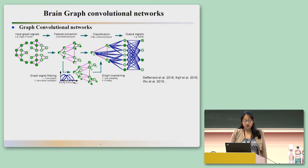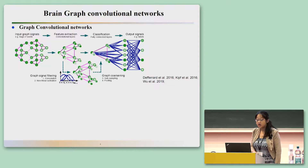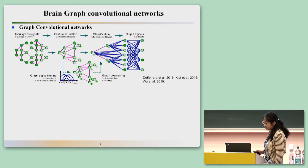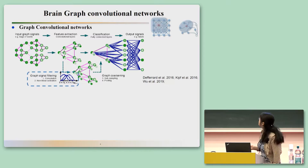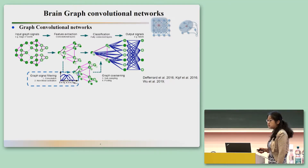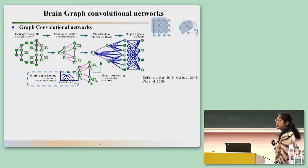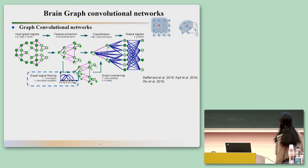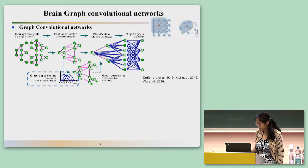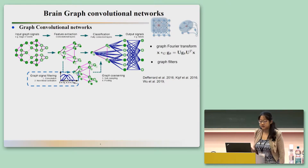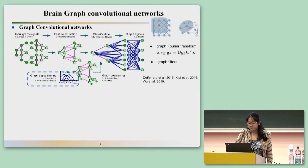In this project, we merge graph signal processing with neural networks to give us graph convolutional neural networks. The key step is graph filtering, also called graph convolutions. The difference from classical 2D convolutions is that in 2D convolutions, neighbors are defined spatially and a weighted sum is computed, whereas in graph convolutions, neighbors are defined by adjacency matrices, and by applying the graph Fourier transform we can define different types of graph convolutions.